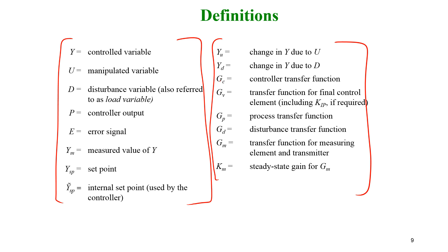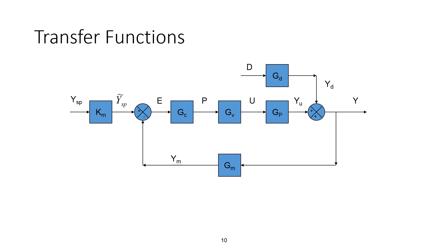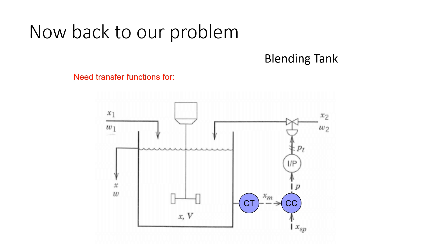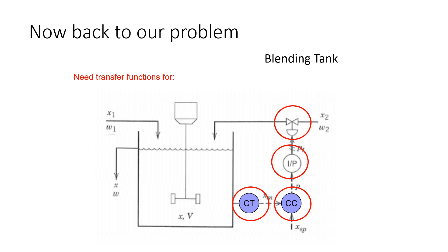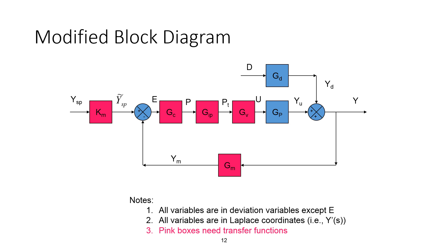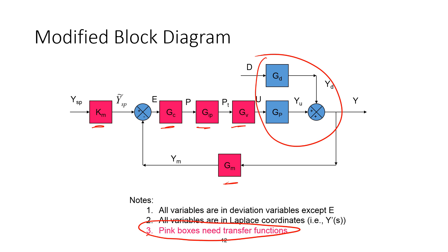We're also going to have transfer functions — the G's are the transfer functions. Here is a standard block diagram form applied to this blending example. We need transfer functions for many pieces of equipment. We only did it for the process and disturbance so far. We need it for the valve, the I-to-P converter, the controller (such as a PID), and the transmitter, which may have dynamics or a gain. The ones already obtained are GD and GP.